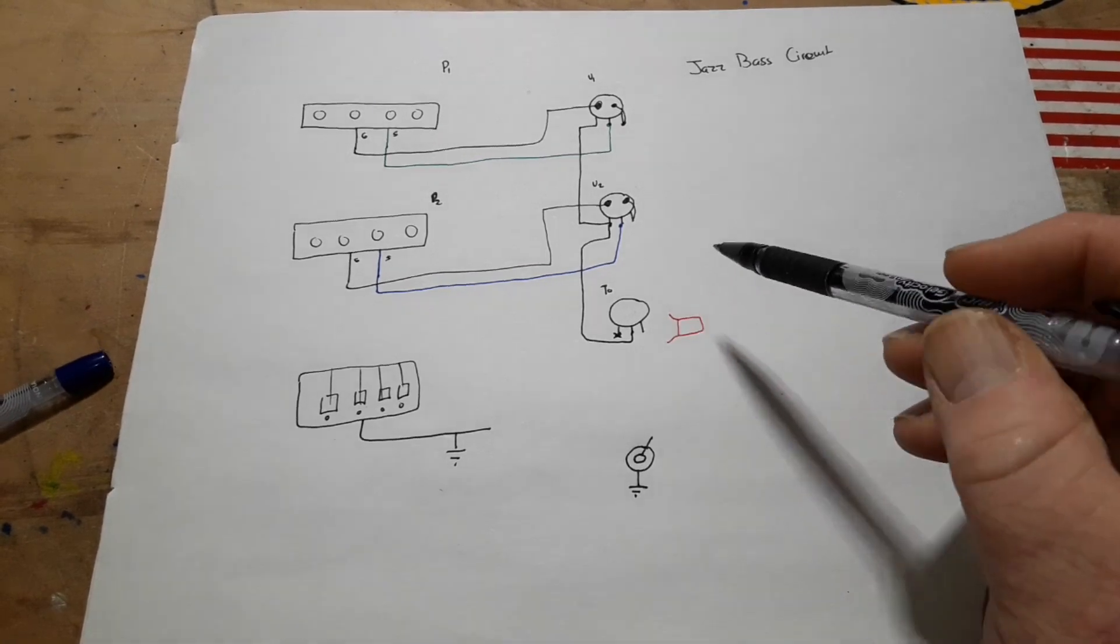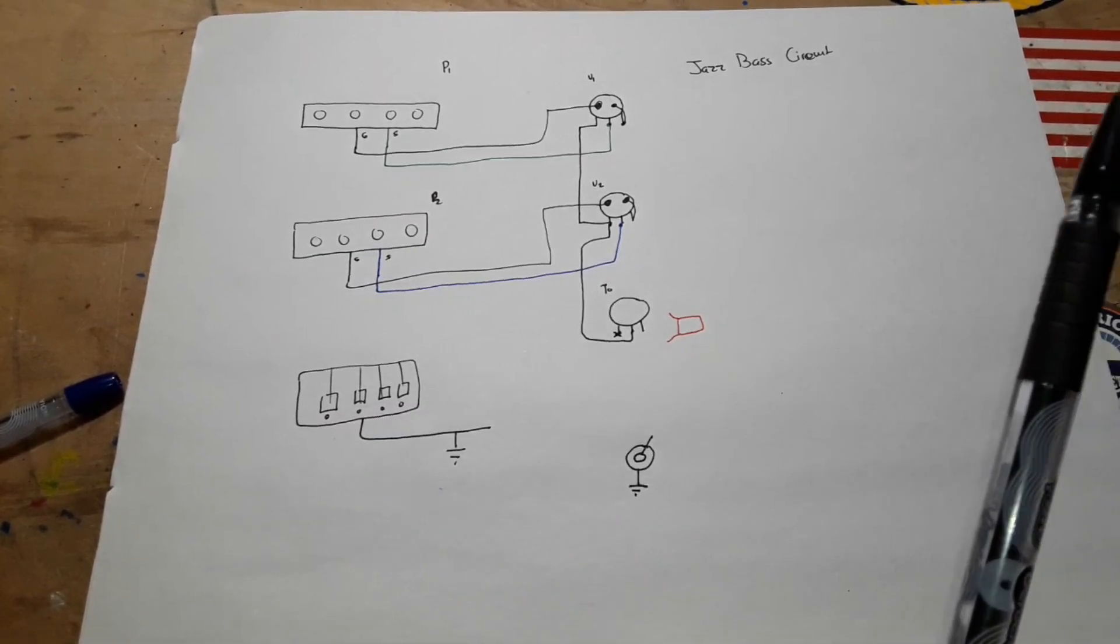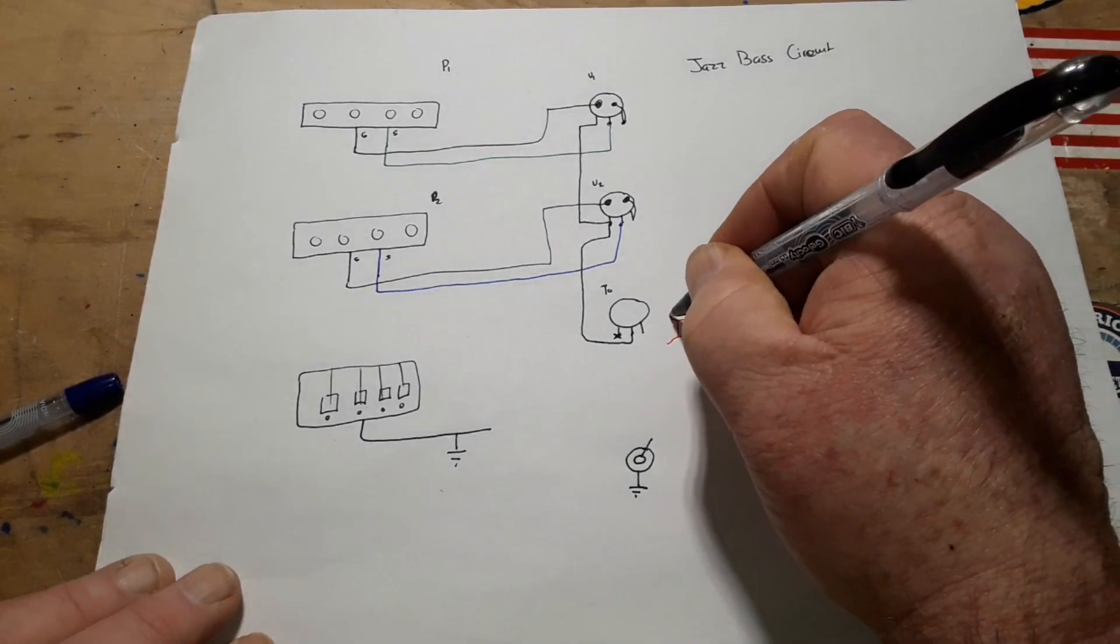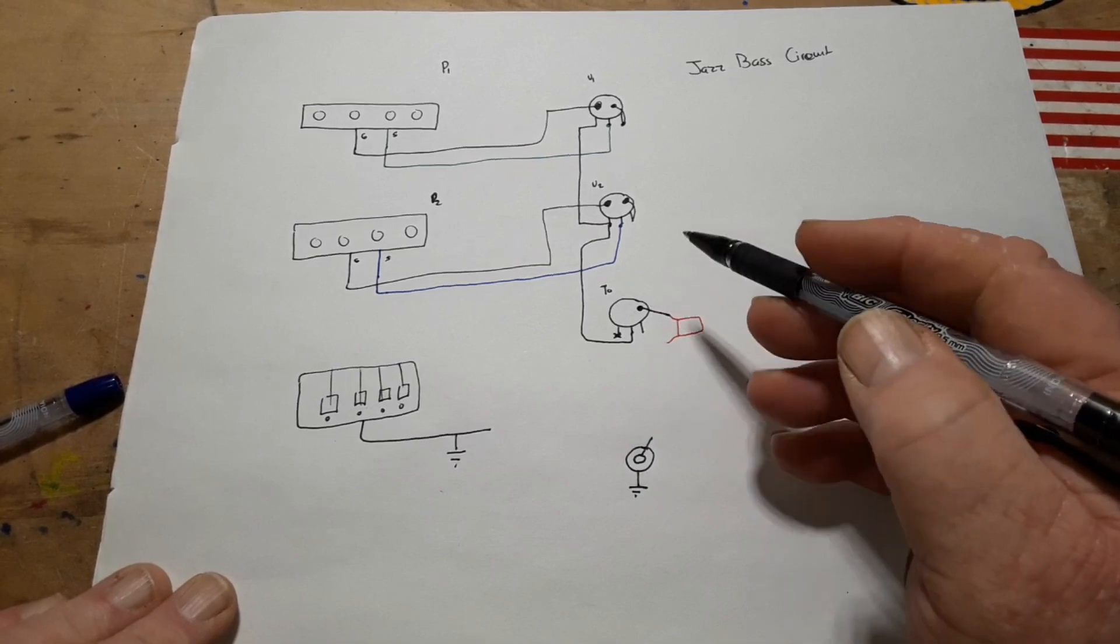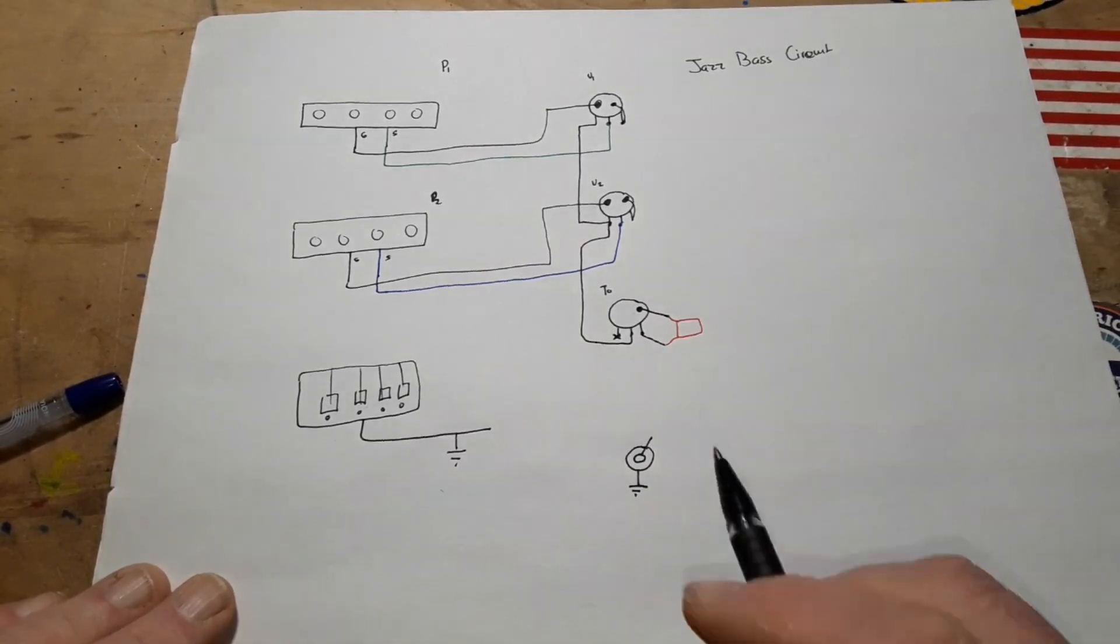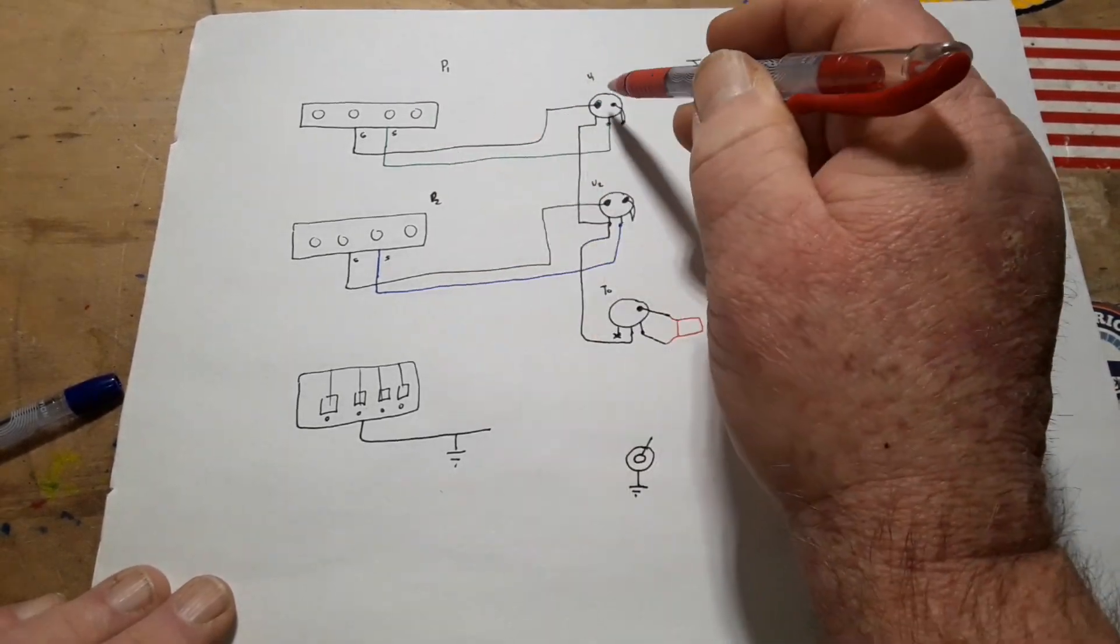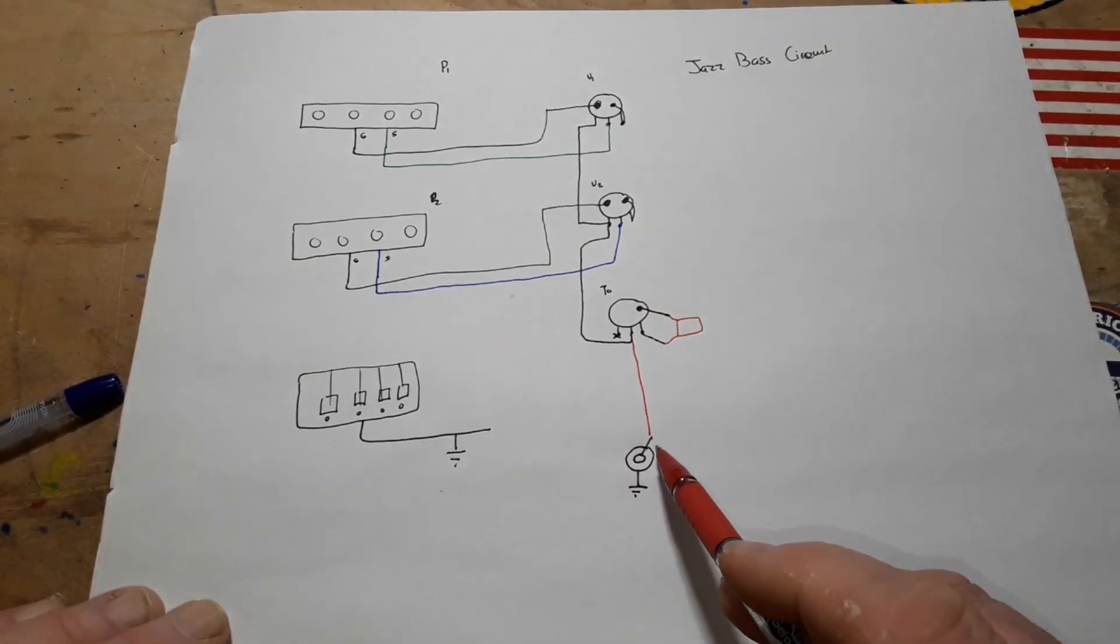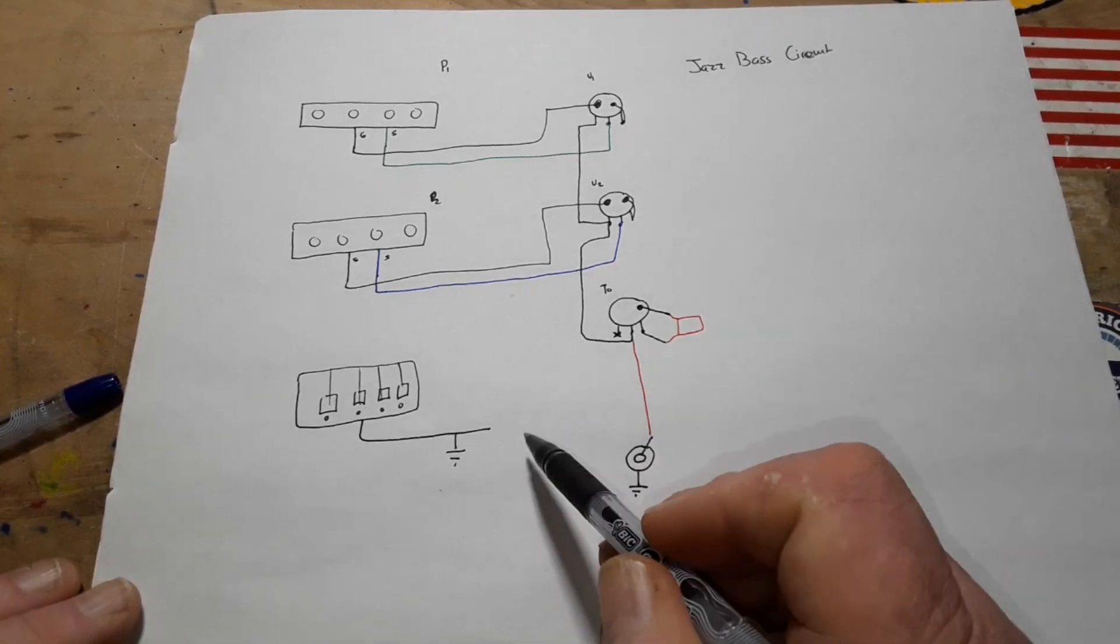Now from the tone control we have this capacitor. What we're going to do is we are going to solder one side of the capacitor to the potentiometer and one side is going to get soldered to this leg here. And finally, our signal is going to come out of the center leg. Remember we followed the signal from the pickups through the volumes through the tone, and it's going to come right down there to the signal lead off of the output jack.